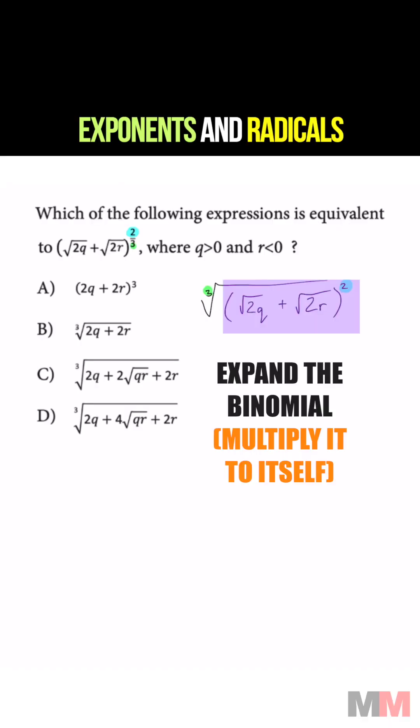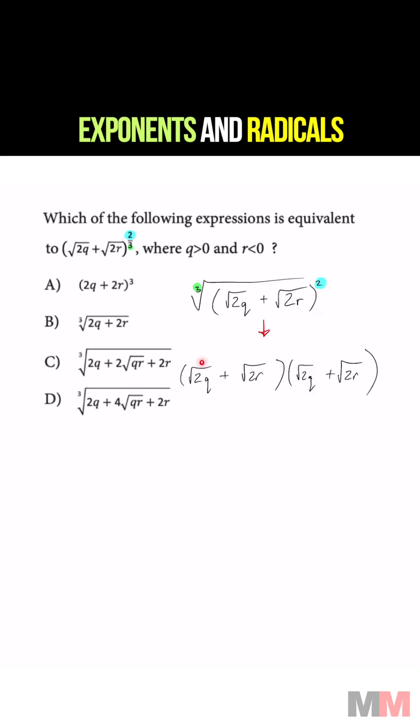The next step is to square this binomial right here. And when you multiply the same square root to each other, the square root just disappears, 2q.